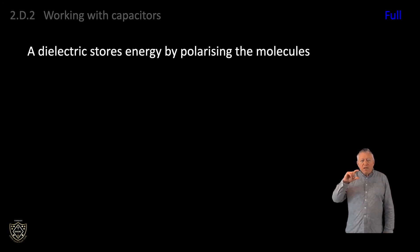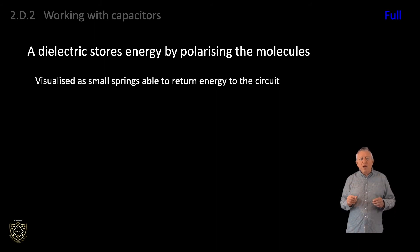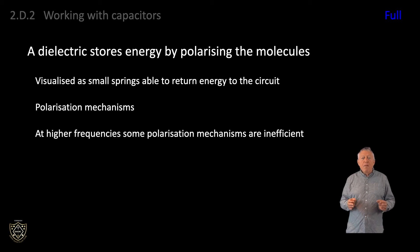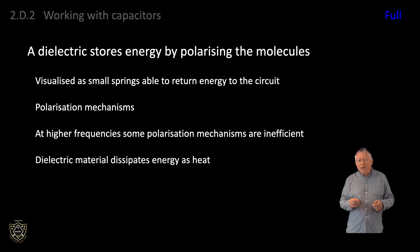Moving on to full licence level. For the full licence, our attention is drawn to dielectric loss. A dielectric stores energy by polarising the molecules in the dielectric material. These can be visualised as small springs able to return energy to the circuit, ideally without loss. These springs are known as polarisation mechanisms and depend on the dielectric. At higher frequencies, some polarisation mechanisms are inefficient and there is movement of charge, so the dielectric material dissipates energy as heat. In general, the higher the permittivity of the dielectric material, the greater the loss that will occur at high frequencies.